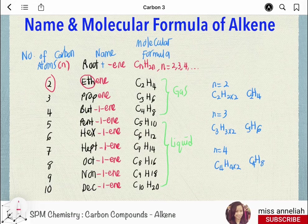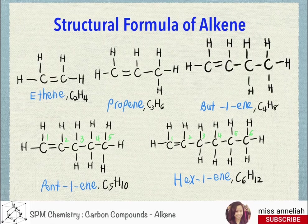The first three members of the alkene series — ethene, propene, and butene — are gases, while the next six members are liquids. These are the structural formulas of the alkenes, which we have already discussed in detail through the step-by-step drawing method.